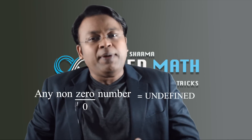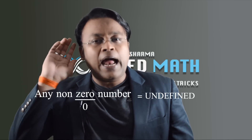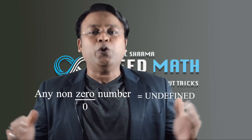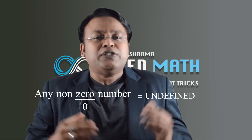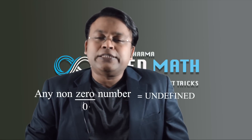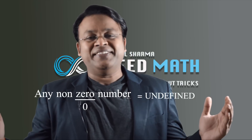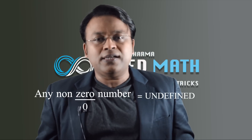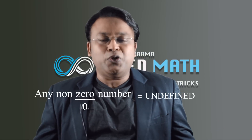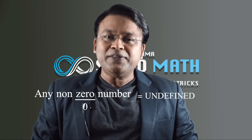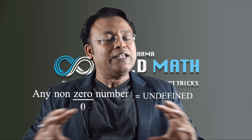The answer to what's 10 divided by 0 is like asking: what's the sound of one hand clapping, or what is the universe expanding into? The question doesn't make sense, so the answer doesn't contain any real information — it's undefined. Any number divided by zero is always written as undefined, because mathematicians don't know how to define it. It's as simple as that.